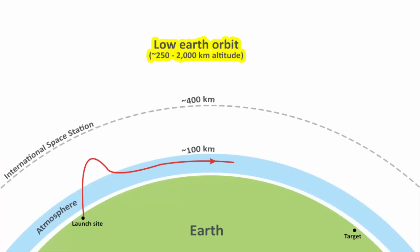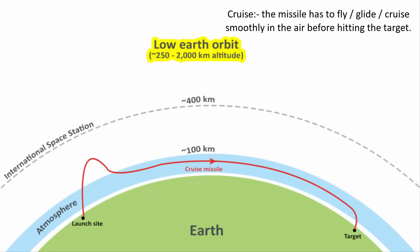Cruise missiles fly in an almost straight line and at lower altitudes. Look at the word cruise. It means the missile has to cruise or fly smoothly in the air before hitting the target.